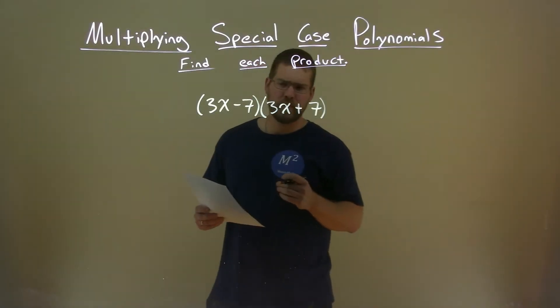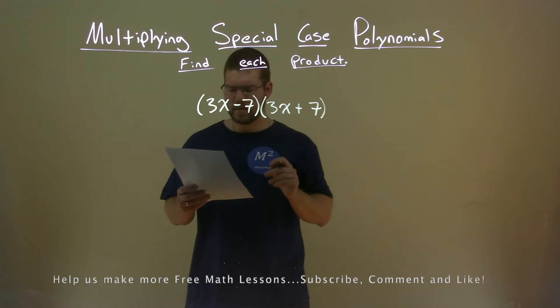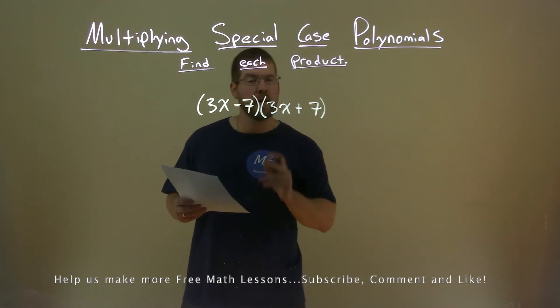We're given this problem here, 3x minus 7 times 3x plus 7, and we need to find the product.